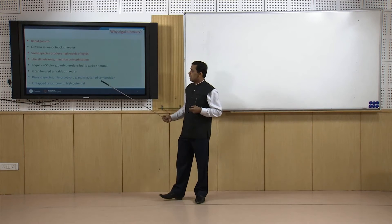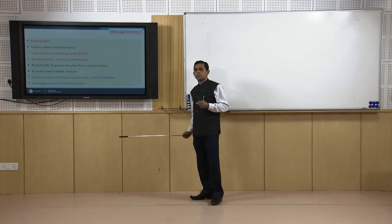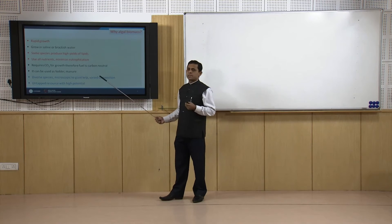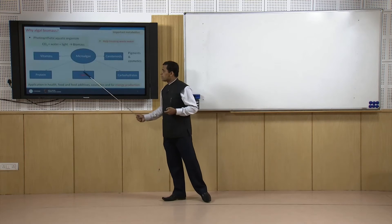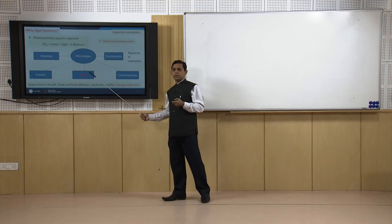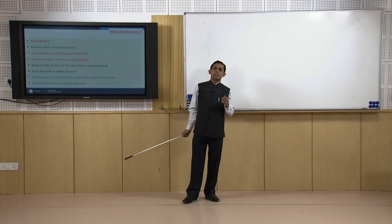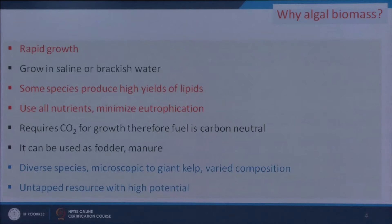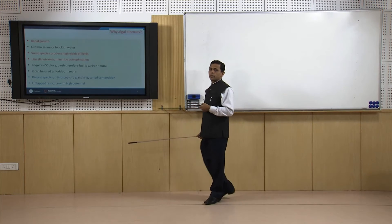Algae are a very diverse species — from very small to giant kelp size — and the number of species with immense potential is large. Different types of metabolites are present and can be separated effectively and used economically, but this resource has not yet been well explored. It is an untapped high-potential resource that we can cultivate and use for different applications, though here we concentrate on energy production.